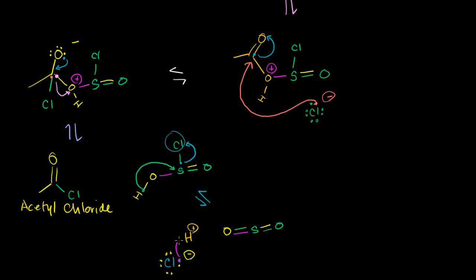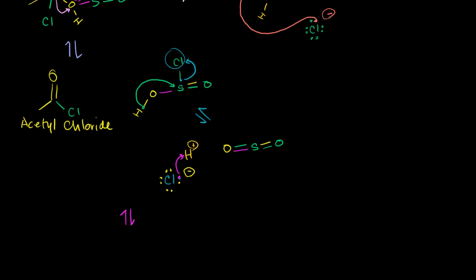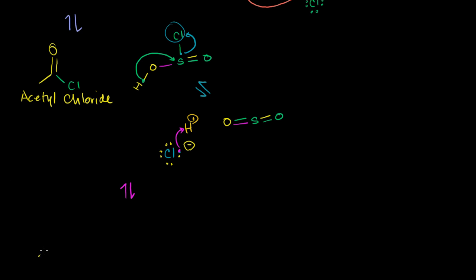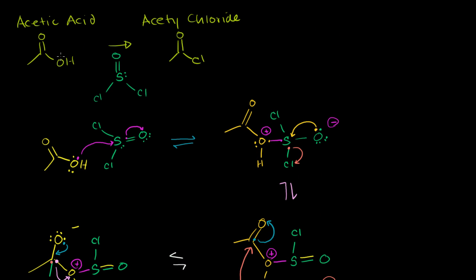When all is said and done, we end up with acetyl chloride, hydrogen chloride, and sulfur dioxide as byproducts. You can generalize this reaction starting with any carboxylic acid to form the acyl halide — or acyl chloride if you use thionyl chloride. Hopefully you found that entertaining.